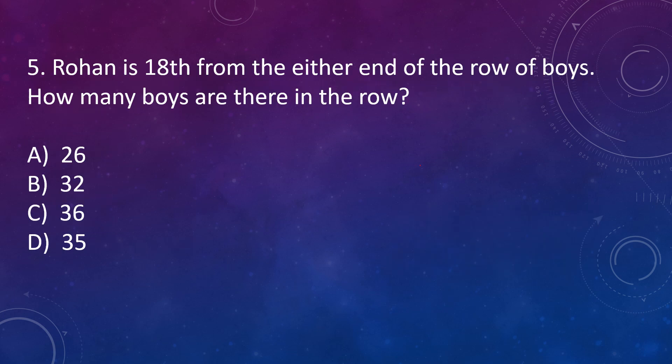Question number 5: Rohan is 18th from either end of the row. How many boys are there in the row? Option A: 26, Option B: 32, Option C: 36, Option D: 35. It is given that Rohan is 18th from either end of the row. That means in this line, Rohan is here from this side, 18th place. That means number of boys after him will be 17, because if we count from here, here is 17th and 18th is Rohan. That means total number in the row are 18 plus 17 is 35. Correct answer is option D, 35.